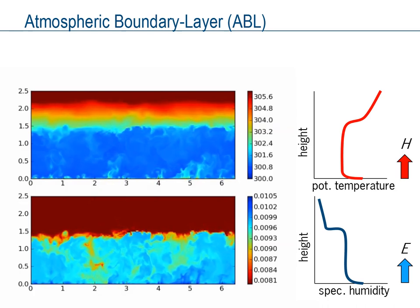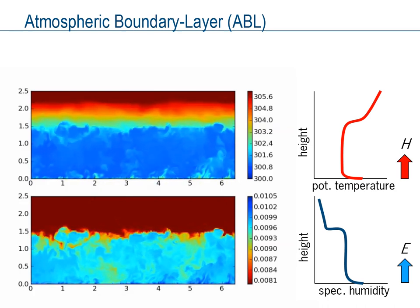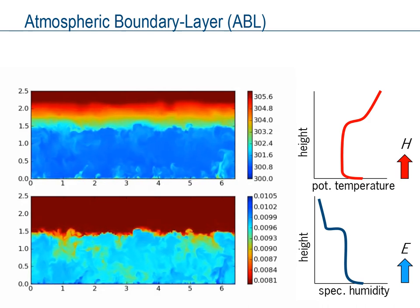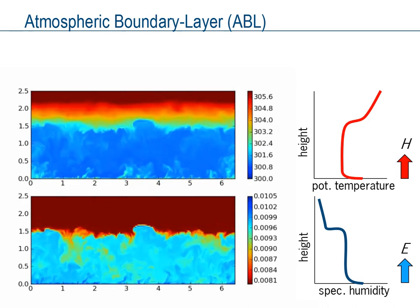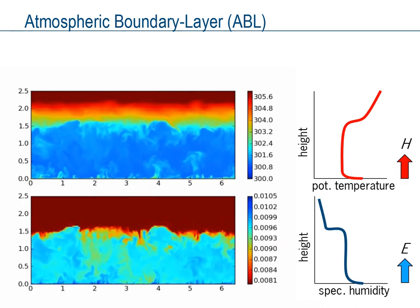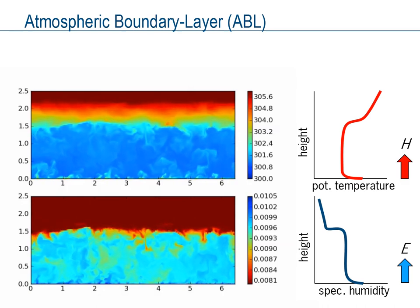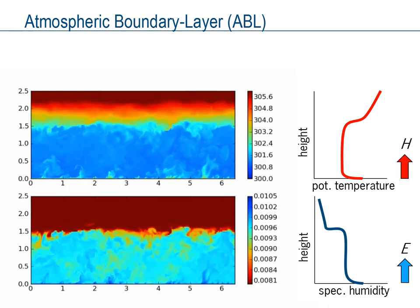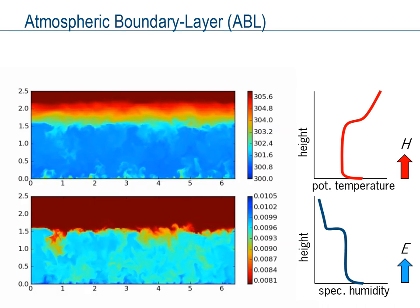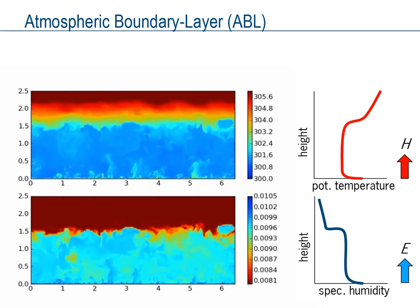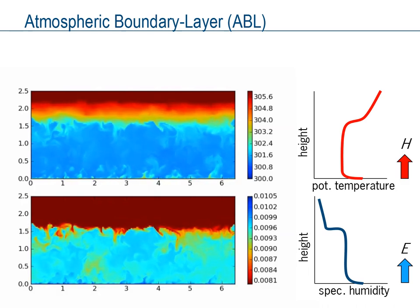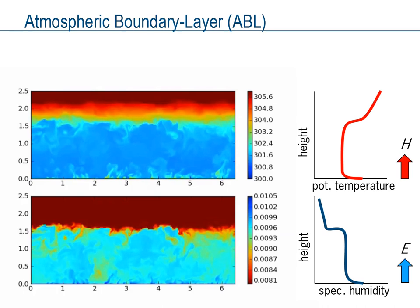To the left we see a vertical cross section through a simulation of a turbulent atmospheric boundary layer. The top cross section shows the potential temperature field in Kelvin, and the bottom cross section shows the humidity field in kg per kg. To the right, the mean vertical profiles of potential temperature and specific humidity are shown, representative of the turbulent fields. The simulated boundary layer is driven by positive surface fluxes of sensible heat and moisture. At the top, the layer is kept by a strong temperature inversion and by a dry layer.